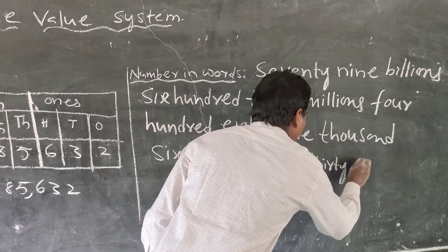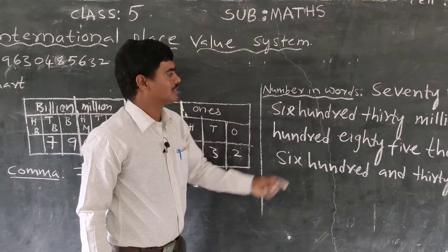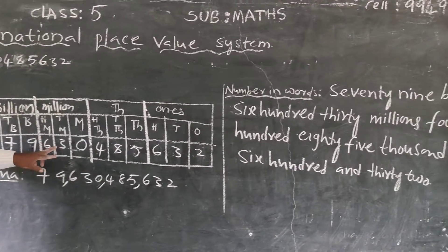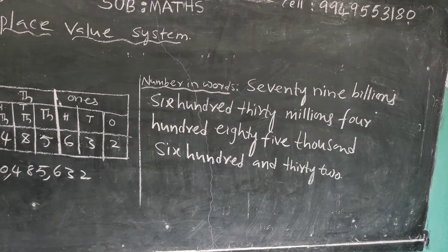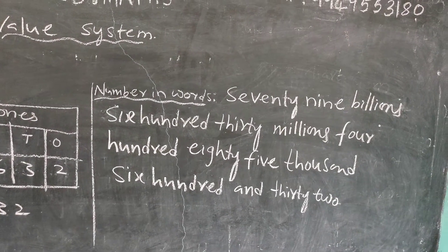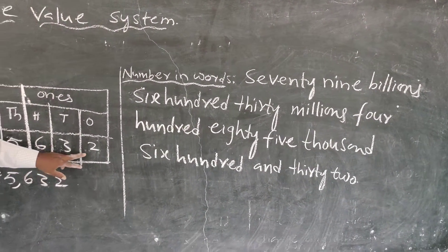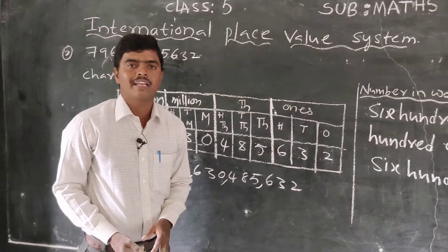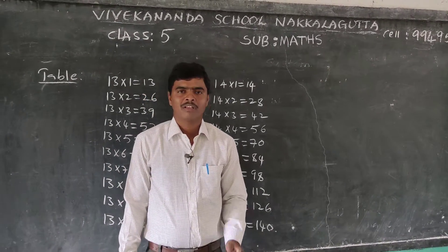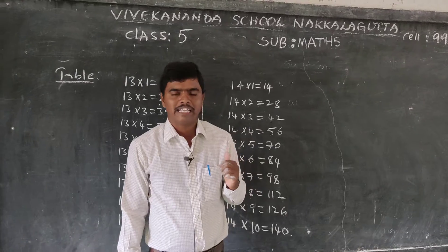So the number in words is: seventy-nine billions, six hundred thirty millions, four hundred eighty-five thousand, six hundred and thirty-two. The international place value system is now completed.